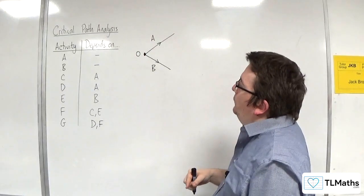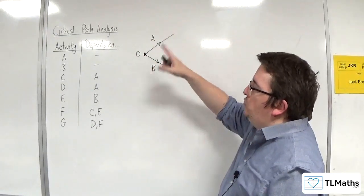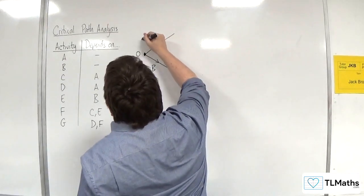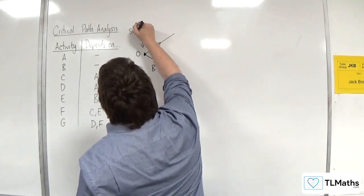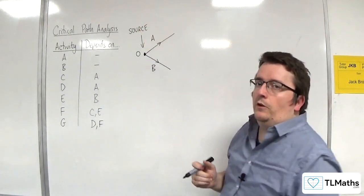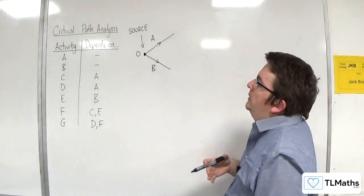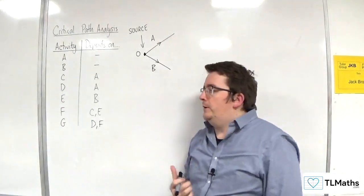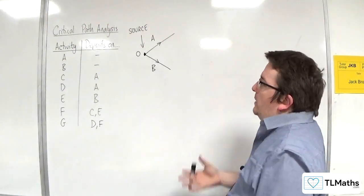You can also consider this, because I'm going to be drawing this as a directed graph, this can also be referred to as the source. Now, that will make more kind of consistent sense when we get onto network flows. And the finishing vertex will be the sink. So, that's my source.